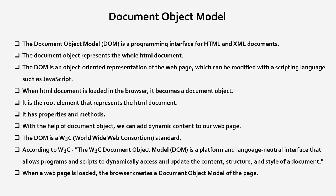The Document Object Model is a programming interface for HTML and XML documents. It is an object-oriented representation of web pages which can be modified with a scripting language like JavaScript. Whenever an HTML document is loaded in the browser it becomes a document object. Since it is an object, it has properties and methods. With the help of the document object we can add dynamic contents to our web pages.